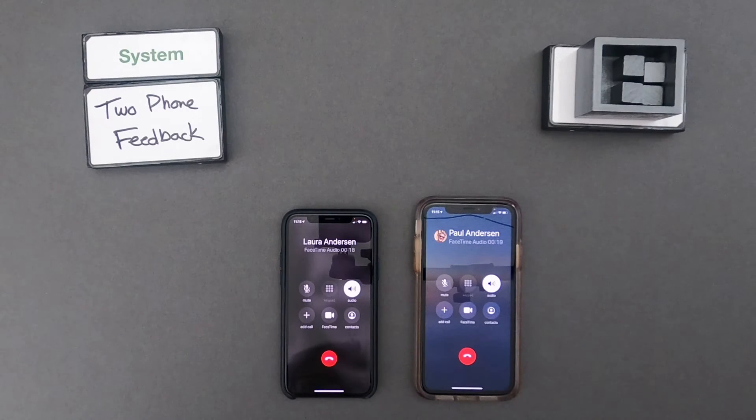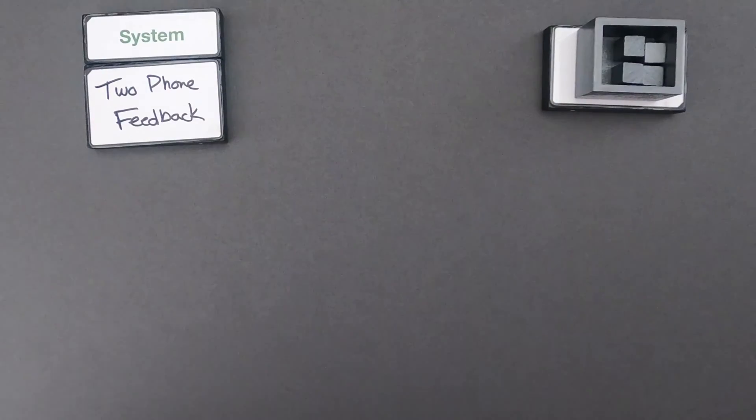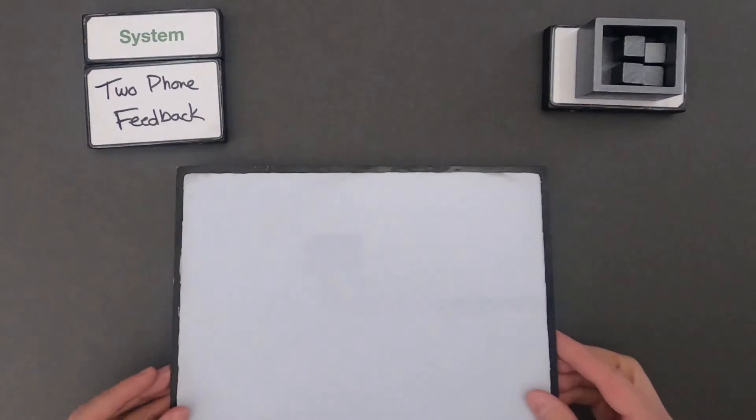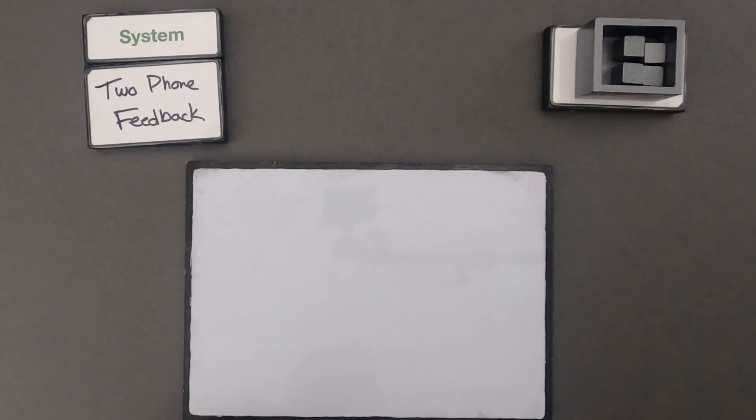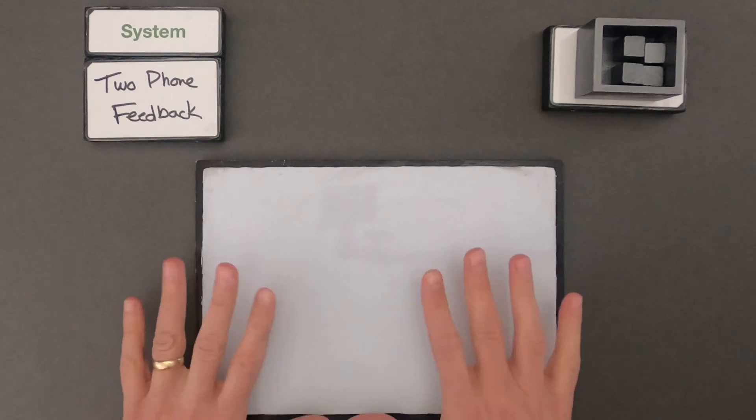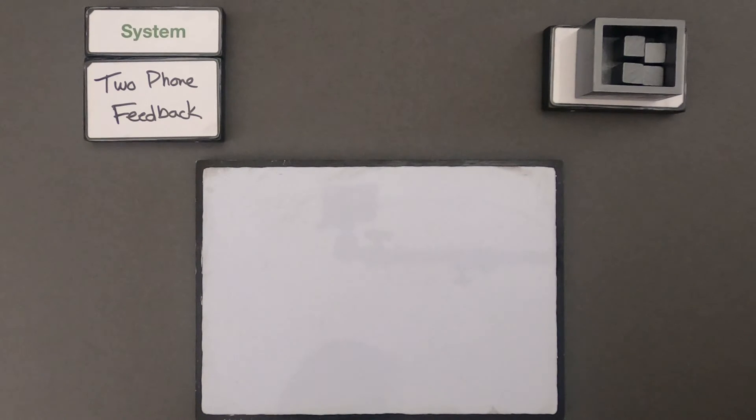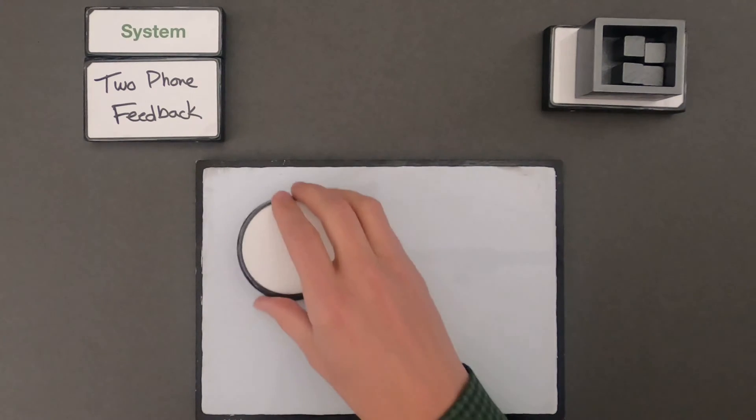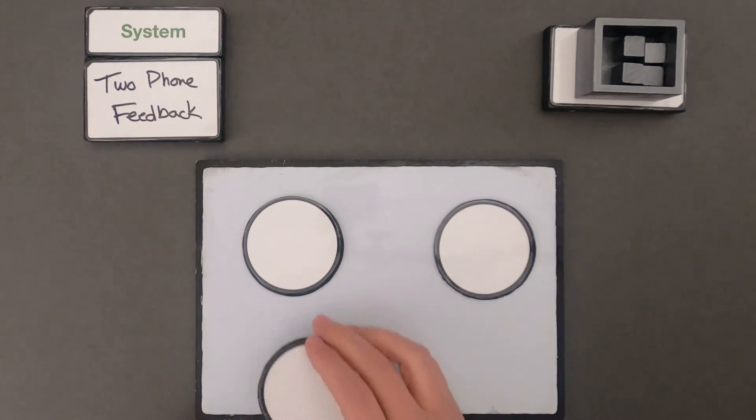And you can see what happens. So we're getting feedback between the two phones. And so let me stop. And so what I'd like to have you do is model what you think is going on with two phone feedback. Let me identify the components so that we're kind of on the same page. Then I would encourage you to pause your video and let's compare our thinking.